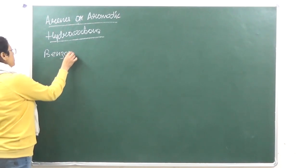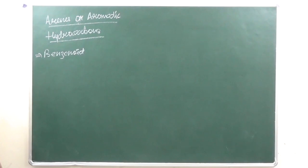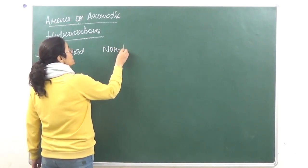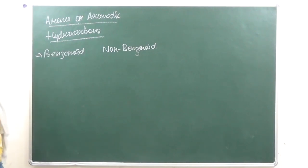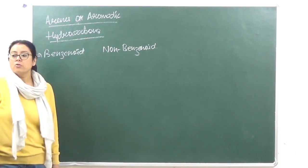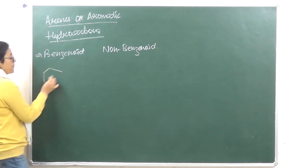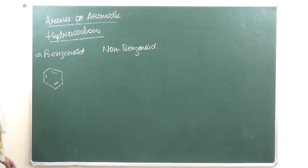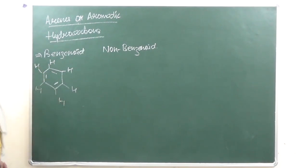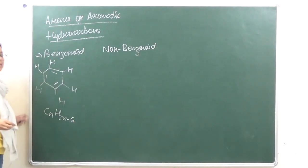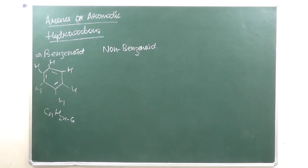We have two types of aromatic compounds: benzenoid aromatic compounds, which contain the benzene ring, and non-benzenoid aromatic compounds, which do not contain the benzene ring. We are going to restrict our study to benzenoid compounds. The benzene ring is a cyclic, homocyclic ring containing six carbon atoms with alternate single and double bonds. The general formula is CnH(2n-6).